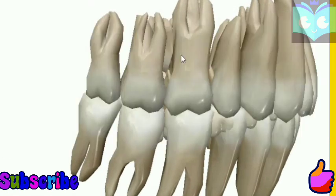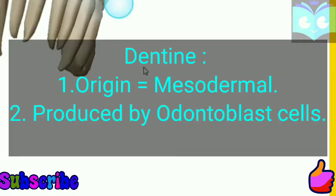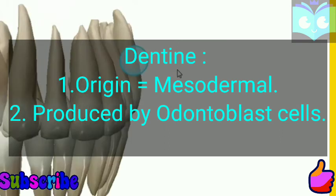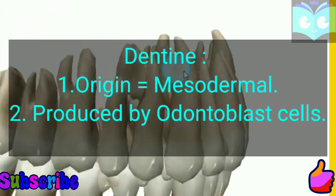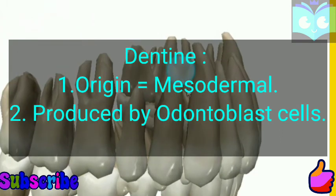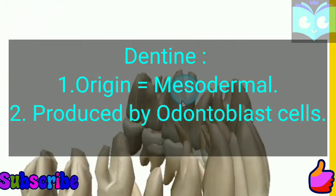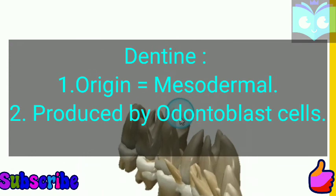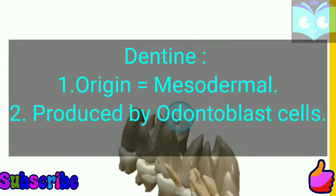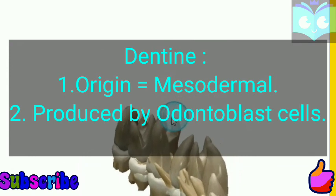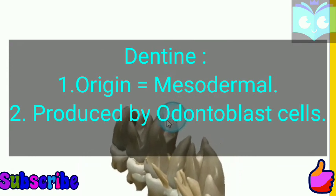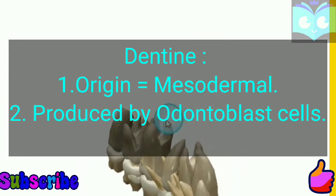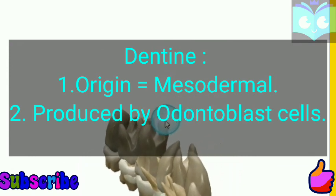Dentine is present just below the enamel. It is the bony part of the teeth, and as it is a bony part, its origin is also mesodermal. It is produced by odontoblast cells.